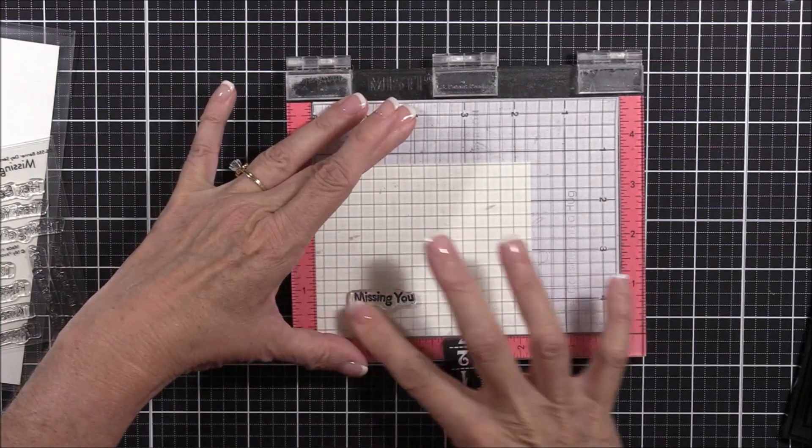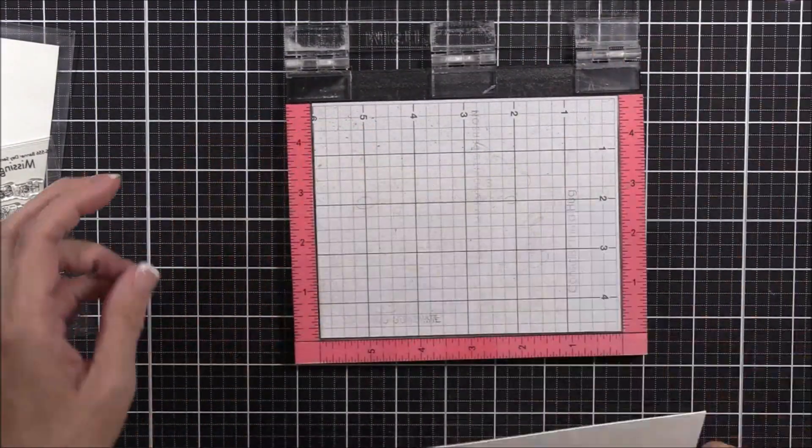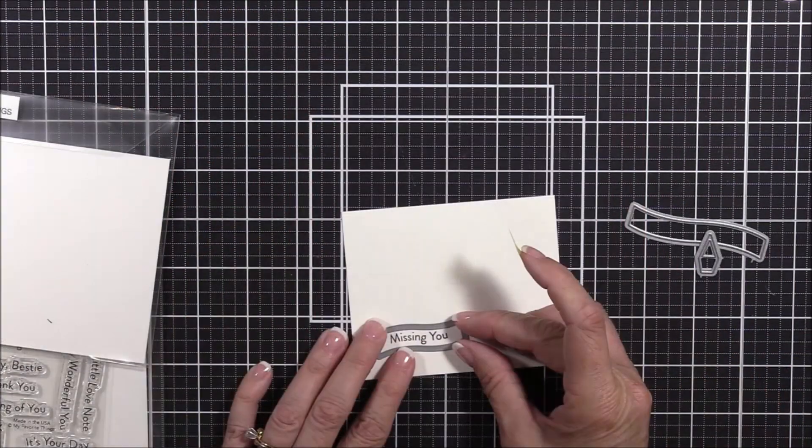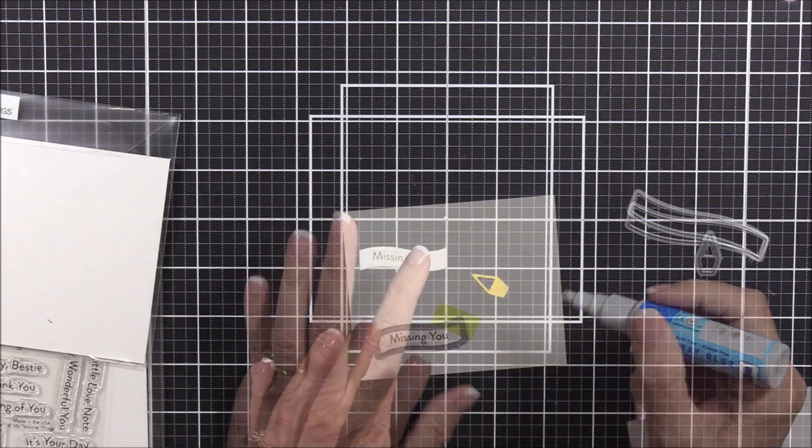Now, let's take care of a few of the card details. I stamped one of the sentiments from the Banner Day Sentiment stamp set onto some smooth white card stock using black hybrid ink, and then I'll use the Banner Flags Dynamics to die cut it off camera.